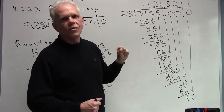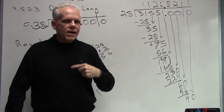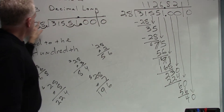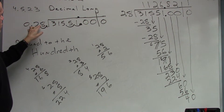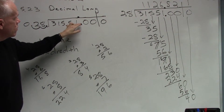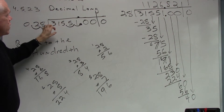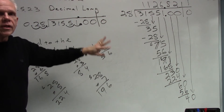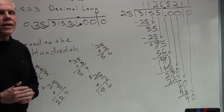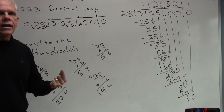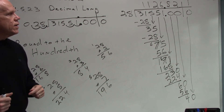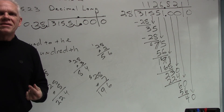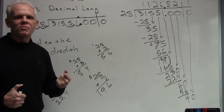The final answer is 1126.82. Jump back into your practice. Be careful to position your decimal correctly as you set up — move the divisor decimal and match it in the dividend. Give yourself plenty of room on the paper to do the work, and check yourself with a calculator if you need to. I'll plan on seeing you next time in Welch's Math Class.